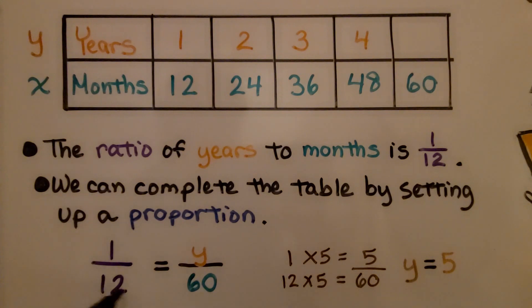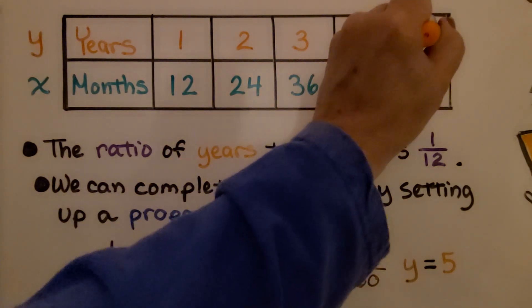So we must need to multiply the numerator by 5, and that means y is equal to 5. So I'm going to put a 5 here.